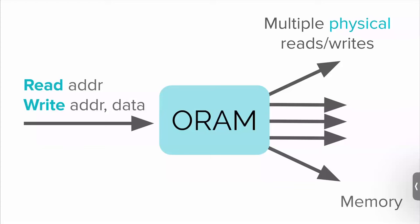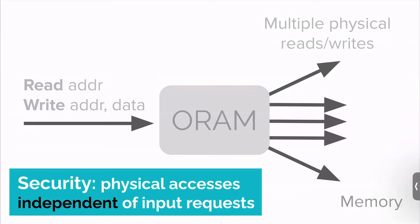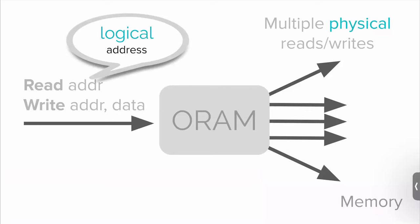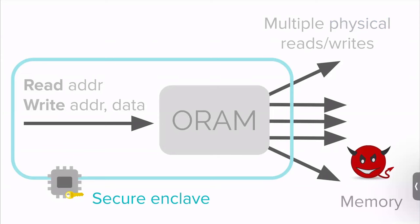Here's a diagram of what ORAM does. The input is a sequence of requests — every request is either read some address or write to some address. It will translate each request into multiple physical accesses. The security it promises is that the distribution of these physical reads and writes should be independent of the input requests, the secret input data. We also call these logical addresses versus physical addresses. When you deploy ORAM on a trusted enclave, you run ORAM inside the secure enclave — the hardware sandbox — and the memory outside can be thought of as the adversary, who can observe memory accesses.